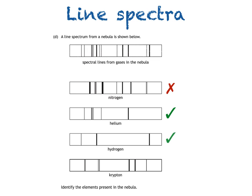Finally, if we look at krypton, we can see that some of the spectral lines appear in roughly the same position in the line spectrum from the nebula. But remember, for a gas to be present, each and every line in its spectrum would have to be present in the line spectrum from the nebula.